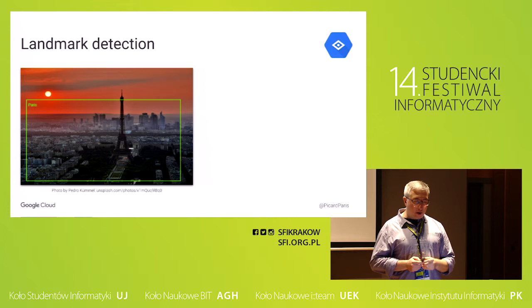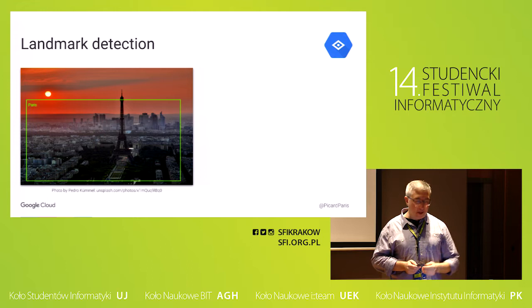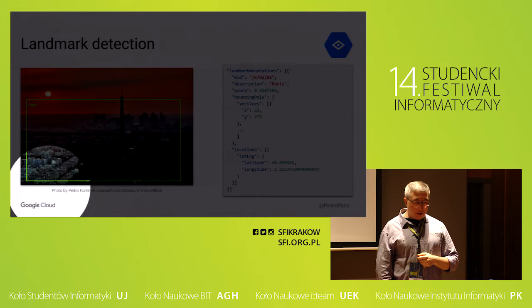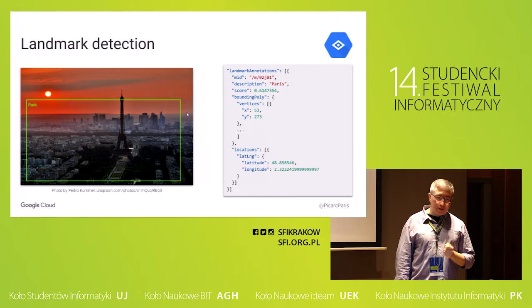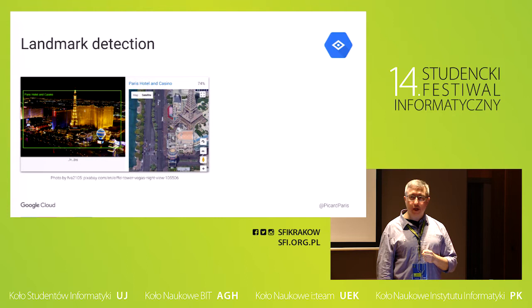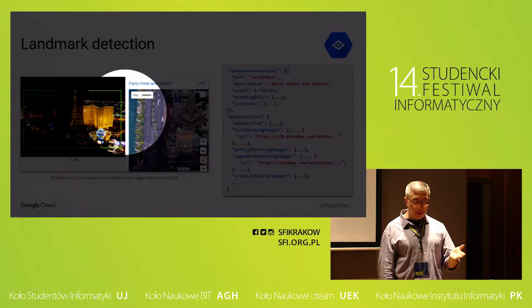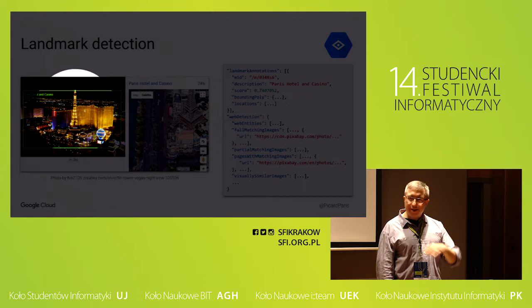I took a picture of Paris from the web, gave it to the API, and it tells me it's about Paris — anyone could tell. It gives landmark annotations, the MID about Paris, the bounding rectangle, and the GPS location. Then I got another picture with an Eiffel Tower, but not from Paris — it's actually in Las Vegas. And in this case it still works, telling me the picture is about the Paris Hotel and Casino in Las Vegas, with the correct Google Maps location for that Eiffel Tower.